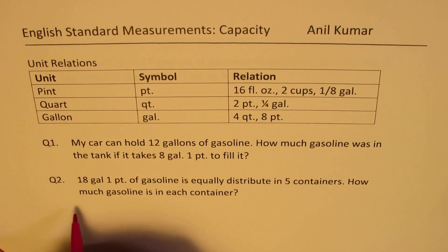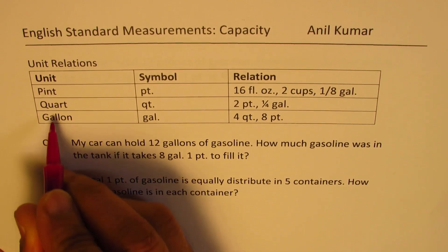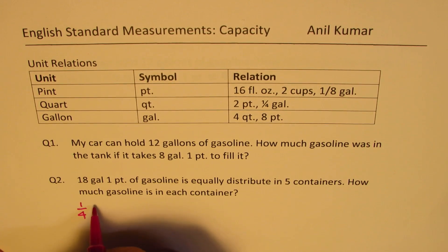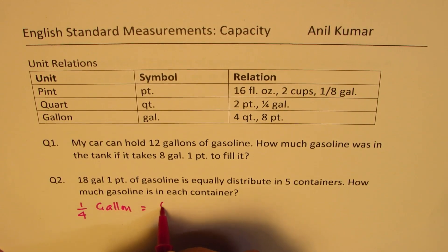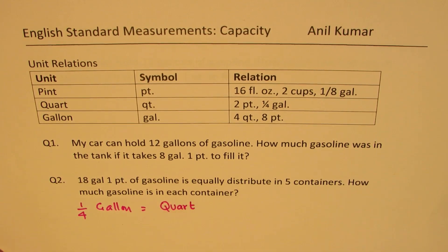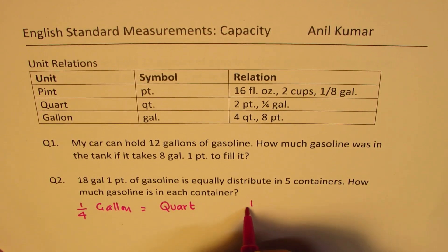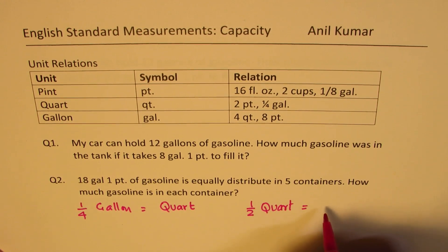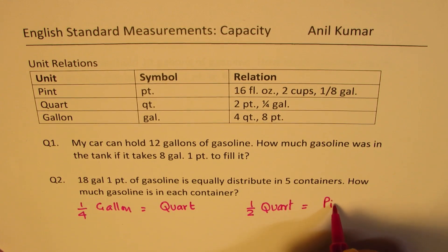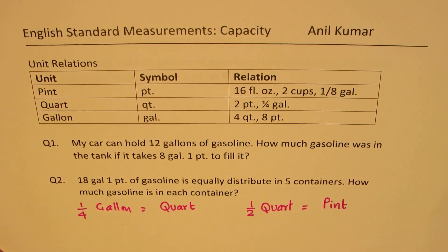One quarter of a gallon is called a quart, so one fourth of a gallon is equal to a quart. And half of a quart is equal to a pint. So that is how these units are related.